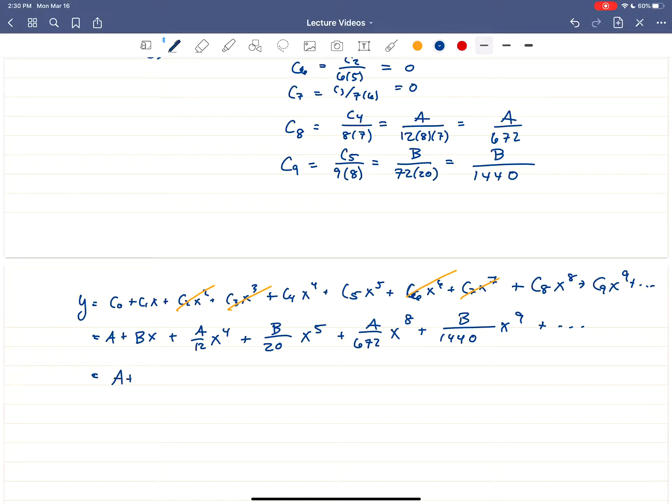We're going to have the A terms. So A plus A over 12x to the 4th plus A over 672x to the 8th, and so on, plus the B terms. So we're going to have Bx plus B over 20x to the 5th, plus B over 1440x to the 9th, and so on. And if you'd like, you can actually factor out the A, and you have 1 plus 1 over 12x to the 4th plus 1 over 672x to the 8th, and so on, plus B times x plus 1 over 20x to the 5th, plus 1 over 1440x to the 9th.